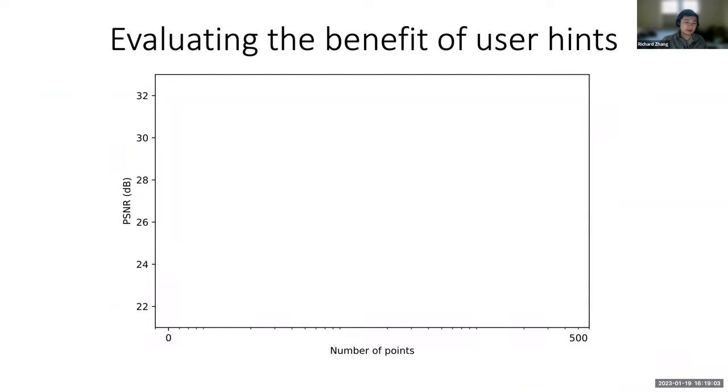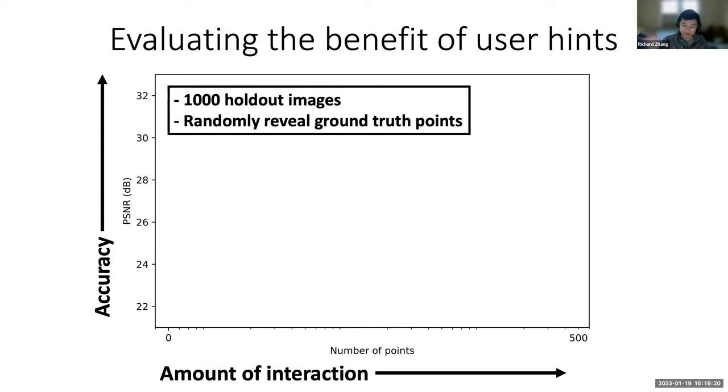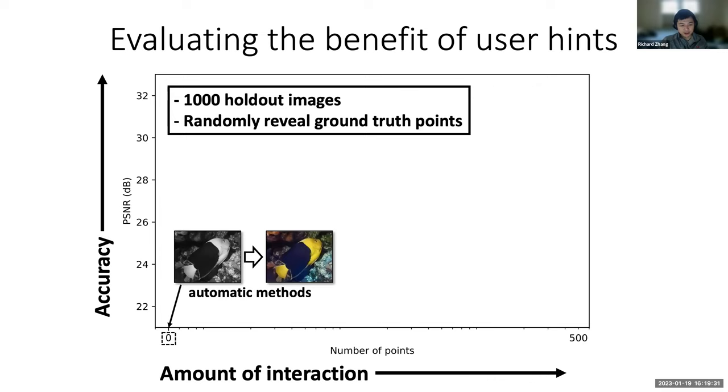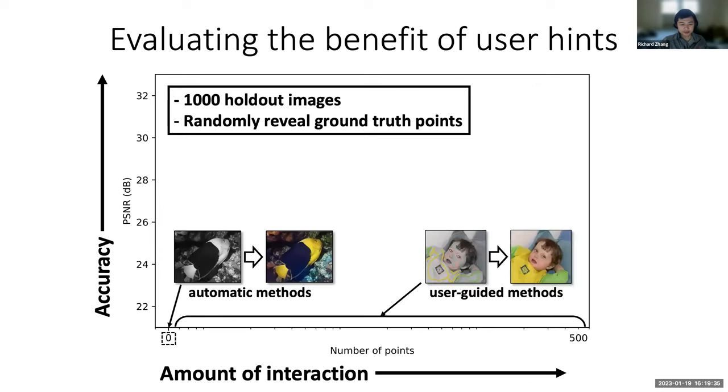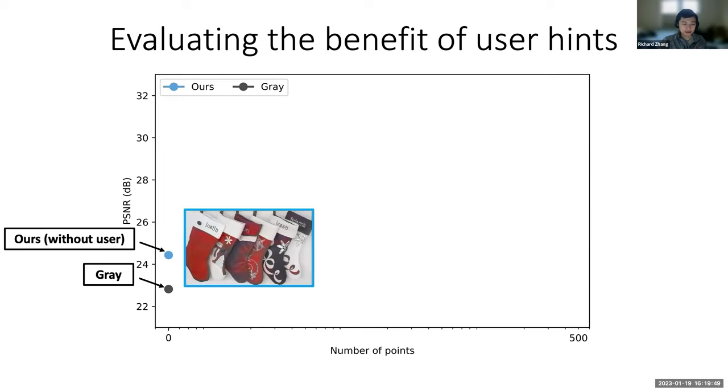We can also quantitatively evaluate the benefit of user hints. We take 1,000 holdout images and randomly reveal ground truth points. On the x-axis here, we have the amount of interaction on a log scale from 0, well 0 is added to this log scale, but really from 1 to 500. We have what we'll call accuracy, which in this case is just good old PSNR in decibels, where higher is better. On the bottom left, we have automatic methods with no interaction. As we start adding points, these start going into the regime of user-guided methods. If you just don't do anything, you just predict gray as a baseline, you get about 23 PSNR. Our system without a user is going to get about 24 and a half, something like that.